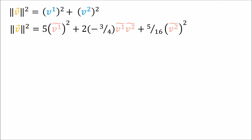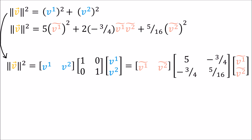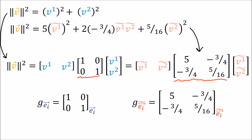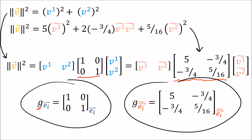We have these formulas for the squared vector length, and we can write the formula for the old components as a series of matrix multiplications — working it out still gives v1 squared plus v2 squared. The same goes for the new coordinate system. The key to getting a vector length in any given coordinate system is this matrix, and this is what we call the metric tensor, denoted by the letter g. This is the metric tensor in the old basis, and this is the metric tensor in the new basis — it's the same metric tensor, just represented by different matrices.